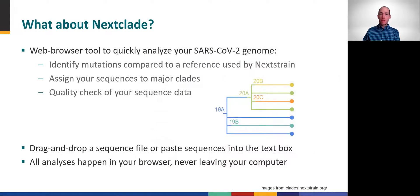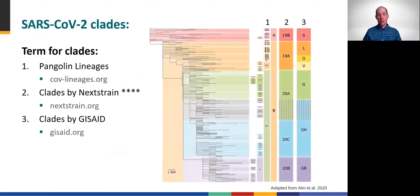Just briefly, I want to also introduce Nextclade, which was developed by the same team as Nextstrain. Nextclade is a friendly web browser tool to quickly analyze SARS-CoV-2 genomes by performing a series of basic but highly informative calculations. You can simply drop or paste your sequences in standard FASTA format into the text box, and all the analyses happen right in the browser, without the data ever leaving your computer. The Nextclade name derives from an effort to categorize clades and branches of the global SARS-CoV-2 phylogenetic tree into groups with standardized nomenclature, including pangolin lineages, Nextclade clades, and GISAID clades.